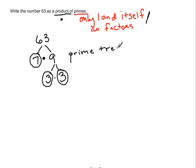I'm not quite finished with the problem yet, because the problem asks me to write the number 63 as a product of primes. So I want to take my information from here and put it together into the final answer. My final answer says 63 is a product of primes.